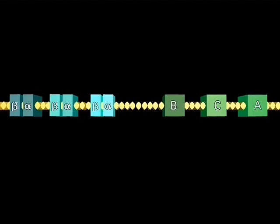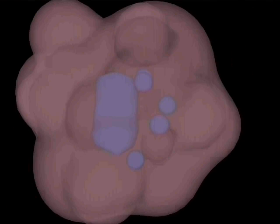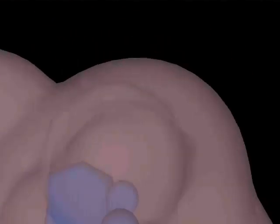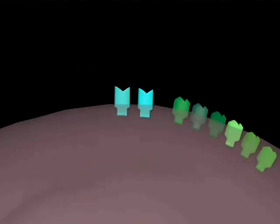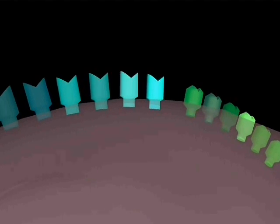The locus also contains three class I genes: B, C, and A. Because each individual has two chromosomes carrying these genes, the maternal chromosome and the paternal chromosome, there are usually six different versions of the class I molecule and six different versions of the class II molecule.